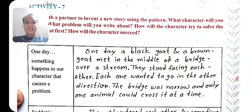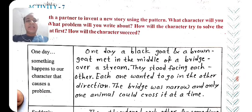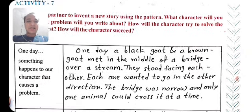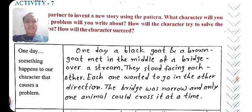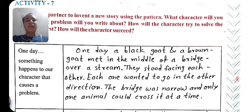In the first part, one day something happens to our character that causes a problem. For example, here is a very small story of two goats. One day a black goat and a brown goat met in the middle of a bridge over a stream. They stood facing each other and each one wanted to go in the other direction. The bridge was narrow and only one animal could cross it at a time.